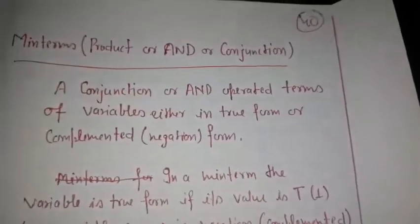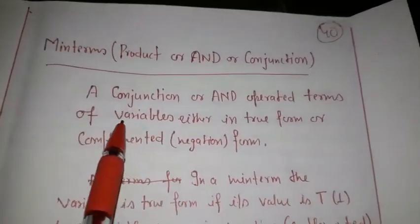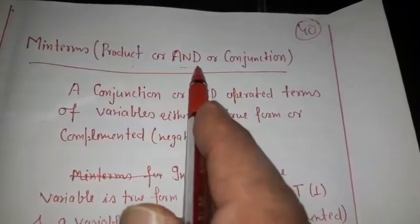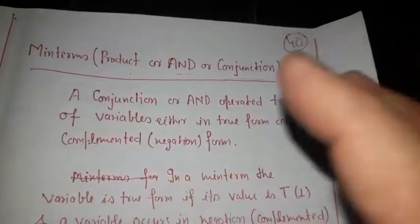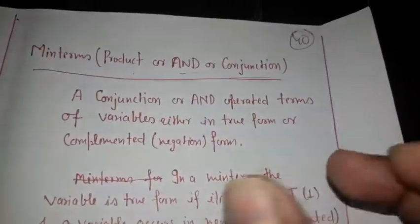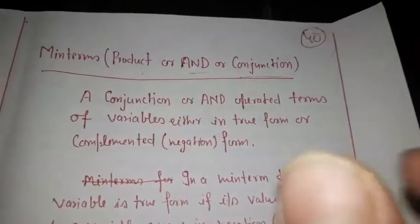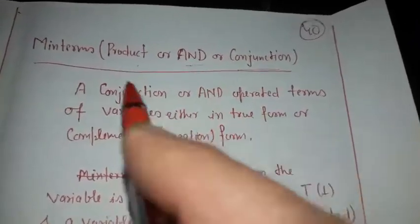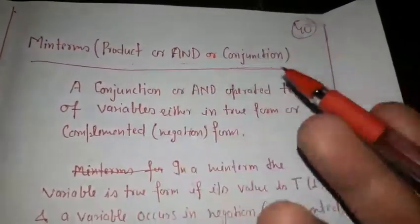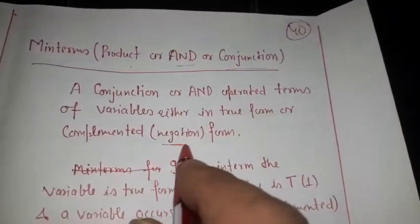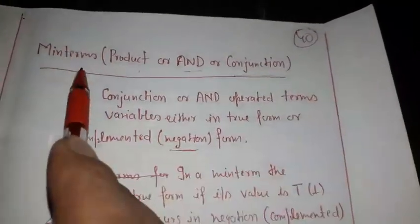There are some terms used when we convert any propositional formula into CNF and DNF. The first term is the min term. A min term is a product term — an AND-operated conjunctive term. Min term is the conjunction of variables either in their true (normal) form or complemented (negation) form.